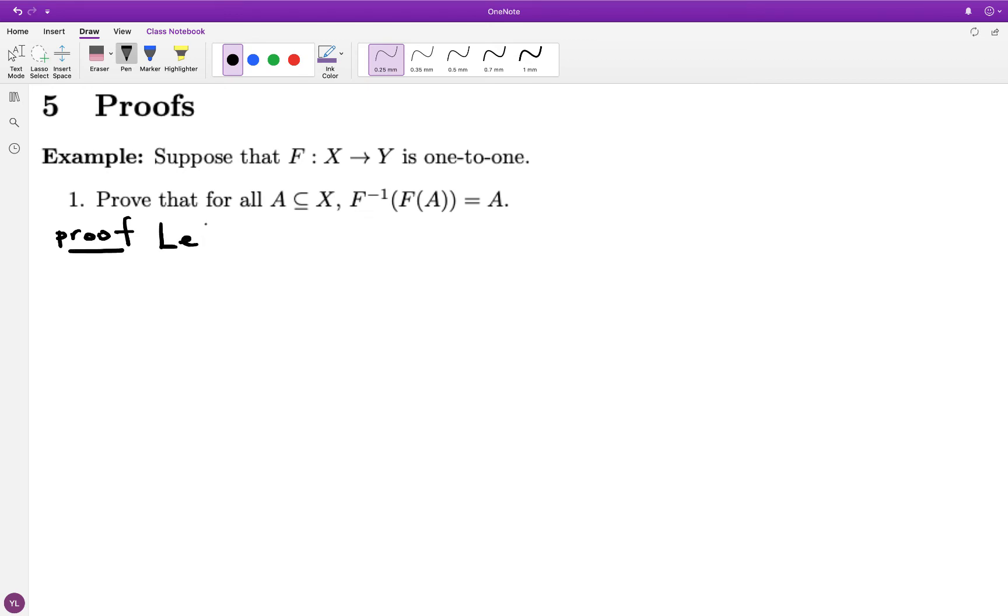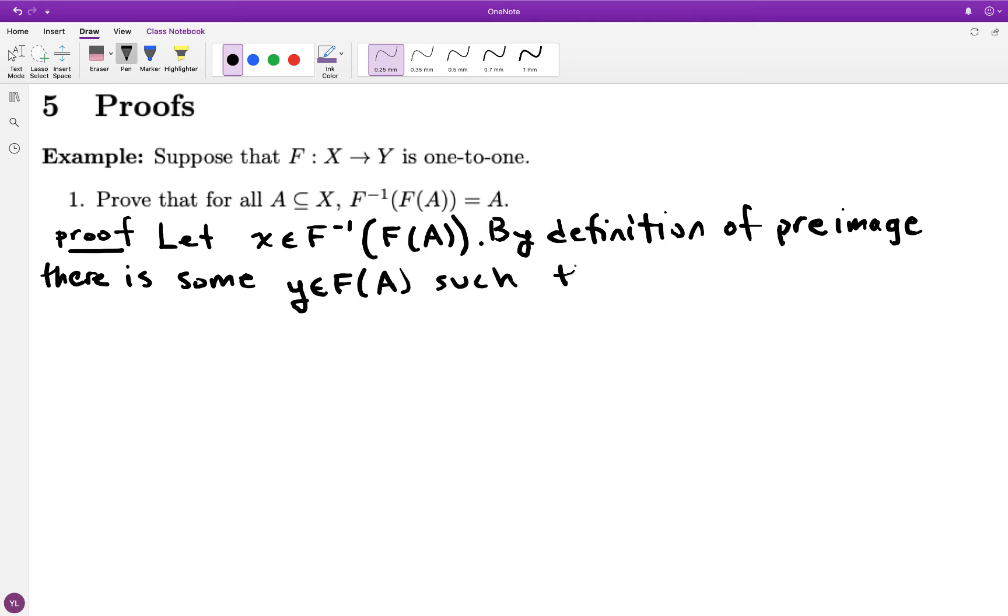Okay, so let's go ahead and continue with proving things here. I want to prove that if I have a 1 to 1 function, then this equality holds. This is a set equality, so I'm going to do the argument in two directions. First, I'm going to argue that the thing on the left is a subset of the thing on the right. I'm going to do that by letting x be an element of the thing on the left and by invoking the definition of preimage.